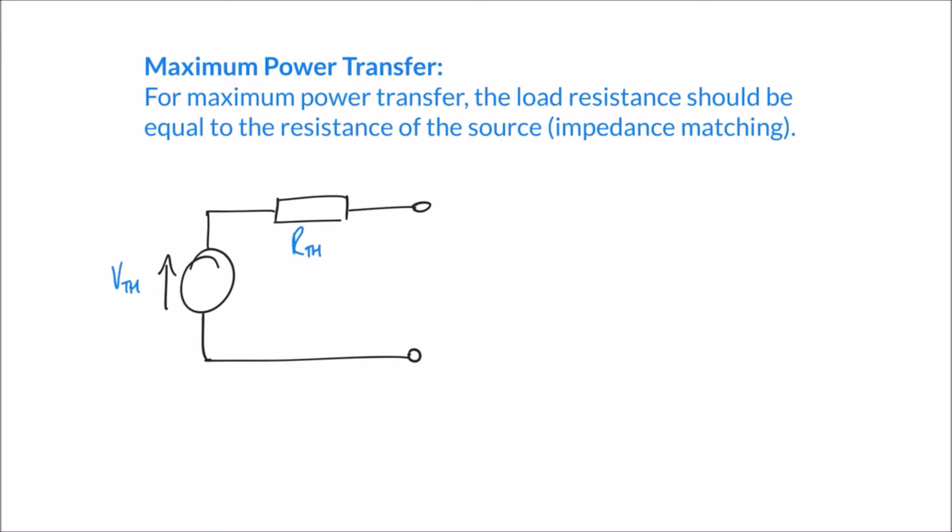In this video we're going to build on some of the ideas covered in previous videos on Thevenin's and Norton's theorems, specifically the idea of attaching a load to our circuit. We're going to look at the idea of maximum power transfer — that for maximum power transfer the load resistance should equal the resistance of the source. An example might be a hi-fi amplifier powering a speaker, where the speaker is the load and the amplifier is the source, so it's important that the resistances or impedances match one another.